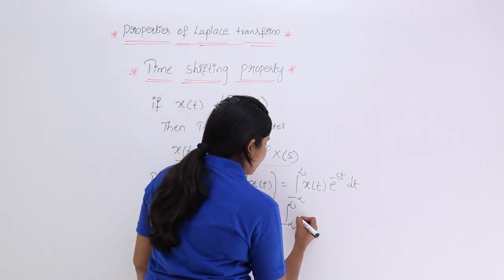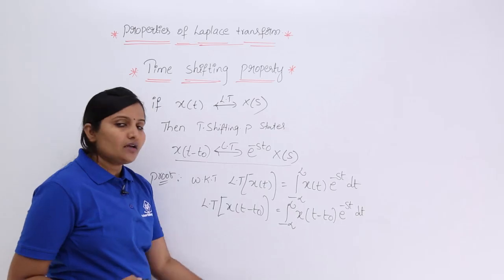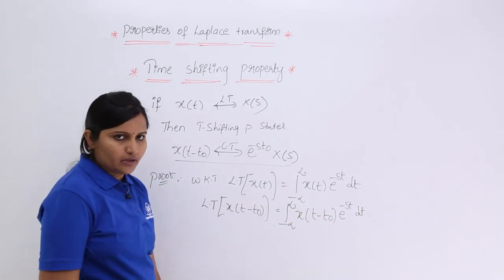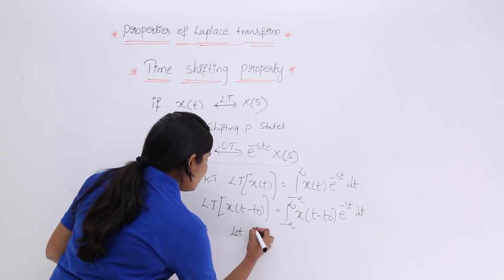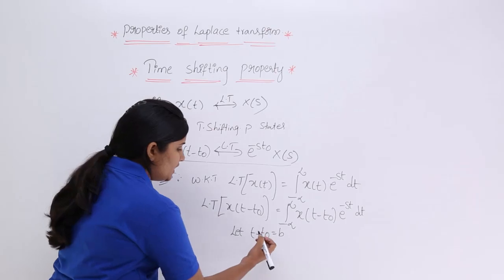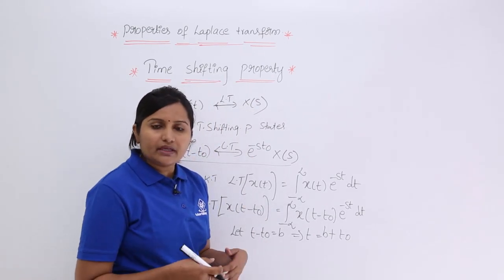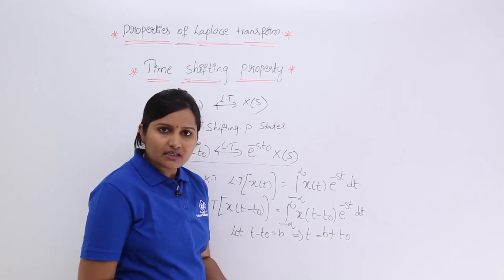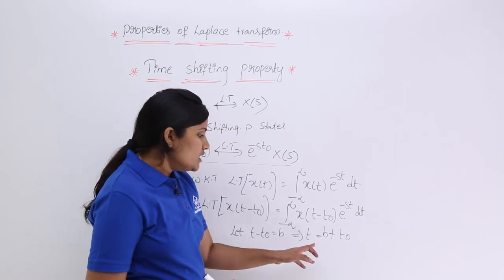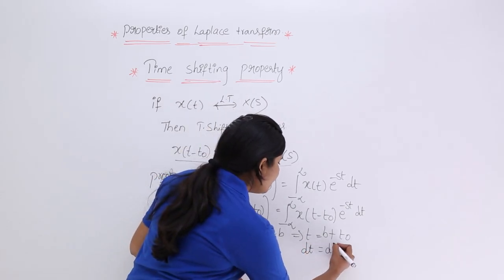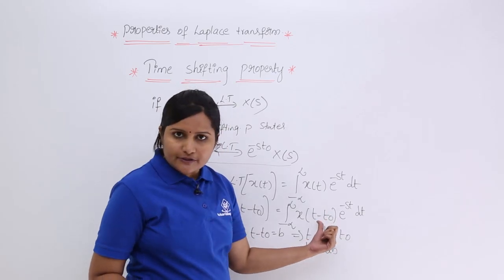In place of X of T in the equation, I substitute X of T minus T naught. That gives the integral from minus infinity to infinity of X of T minus T naught into E power minus ST dt. For further processing, I consider T minus T naught as a new time variable. Let T minus T naught equal B, so T equals B plus T naught. Since T naught is a constant, differentiating gives dt equals dB.